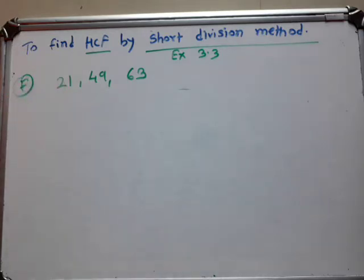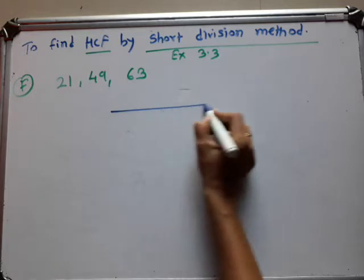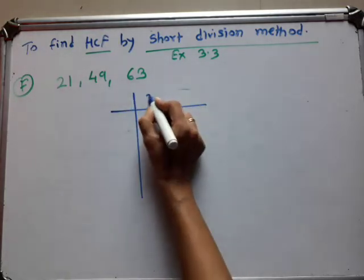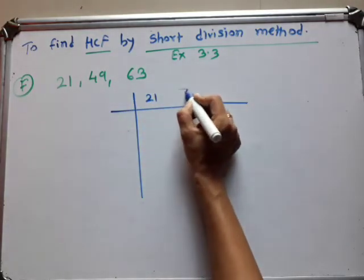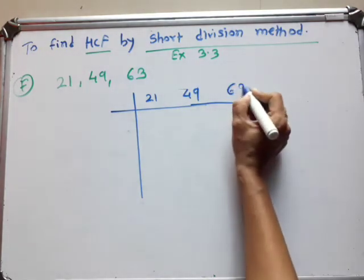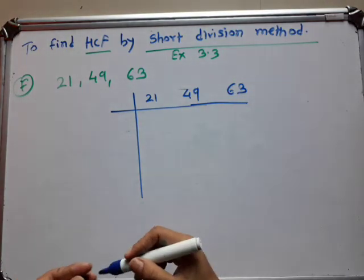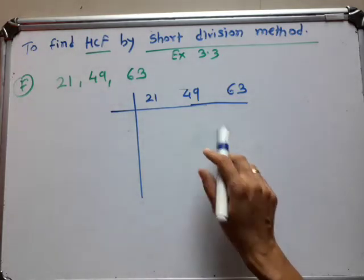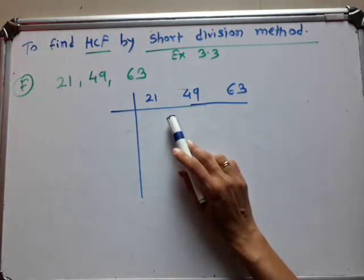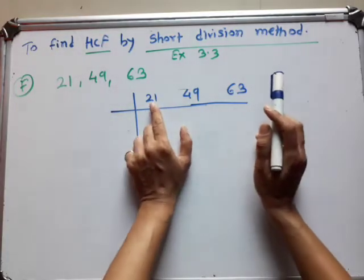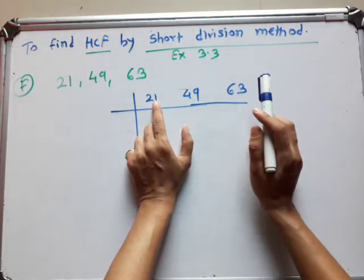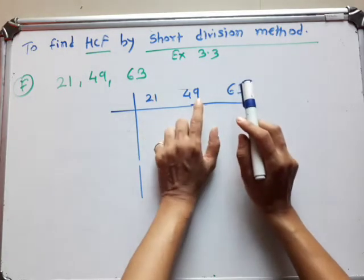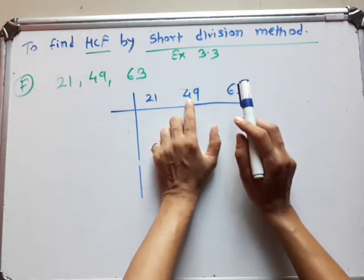We take these numbers. Now we have to see here — again we have to arrange these numbers in the division method: 21, 49 and 63. Now you have to check — these are odd numbers, and odd numbers are not divisible by 2. Then check table 3. What is the rule for divisibility of 3? You have to add the digits. 2 plus 1 is 3, so this number will be divided by 3. Then 4 plus 9 is 13 — 13 is not divided by 3, so this number will not be divided by 3 either.